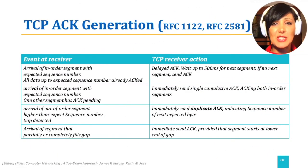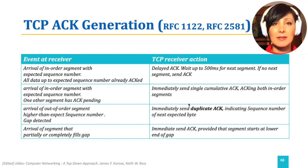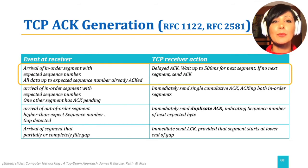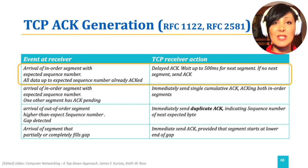After reviewing simple retransmission scenarios and gaining an understanding of byte stream cumulative ACK, let's take a look at how the TCP receiver decides how to generate the ACK upon receipt of a segment. When an in-order segment with the expected sequence number arrives at the receiver, and all data up to the expected sequence number are already acknowledged, the receiver delays sending the ACK in order to wait for the next segment to be able to send a cumulative ACK for all received bytes.